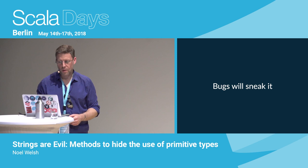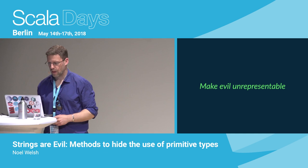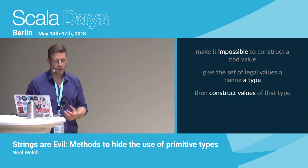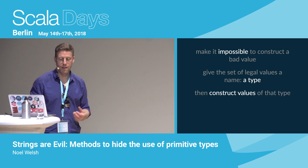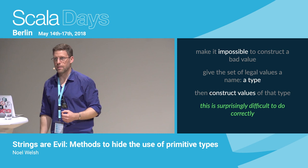So what we really want to do is make it impossible to represent invalid values - make invalid states impossible to construct. Give the set of legal values a name, which is a type, and then we only construct values of the type of interest. If we're really dealing with kittens, those are going to be positive numbers. If we're really dealing with years, we probably need some smart handling distinguishing AD and BC. And what we're going to see is that this is actually fairly hard to do correctly, so let's look at some techniques for doing this.